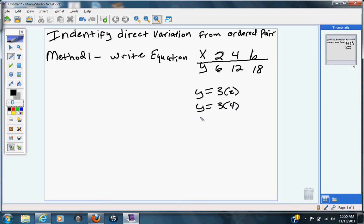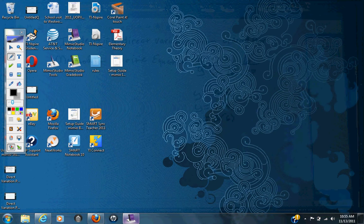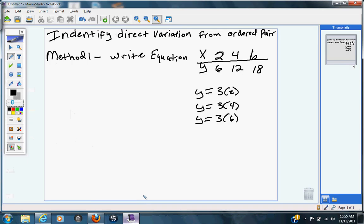And my third ordered pairs, I see y is equal to 3 times 6. So with this information, I can actually write a statement that says y is equal to 3x.